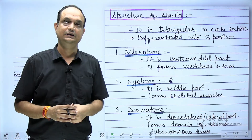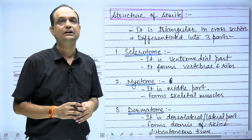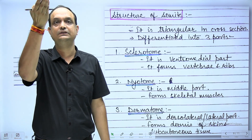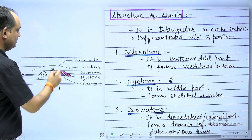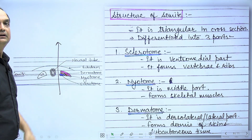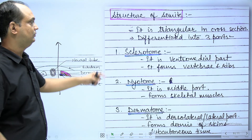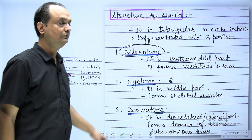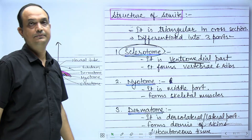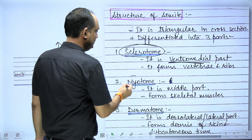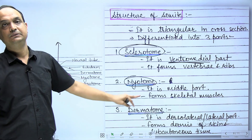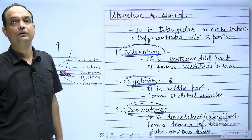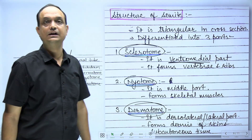What is the structure of somites? In cross-section, somites are divided into 3 parts from ventral to dorsal — that means from the yolk sac towards the amniotic cavity. The most ventromedial portion is known as sclerotome, which forms the skeletal tissue — meaning vertebral bodies and ribs. Above that is the myotome, which forms the skeletal muscles. The dorsal-most structure is the dermatome, which forms the dermis and subcutaneous tissue on the dorsal aspect.